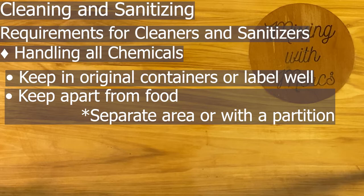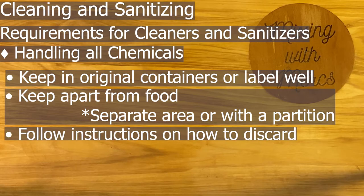Keep chemicals completely separate from food — ideally in a completely separate area. If you can't, have some sort of partition that keeps things from dripping onto food or food contact surfaces, including single-use items like paper plates or cups. Finally, follow any instructions on how to discard chemicals — some things can't just be thrown in the trash — so consult the directions to avoid causing issues with waste collection.